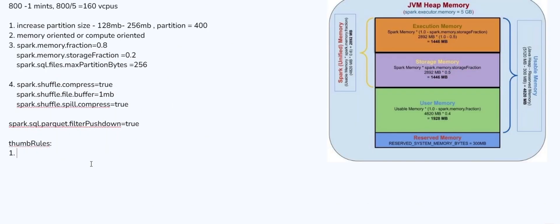The thumb rules are: first, choose the partition count to be two to four times your number of executors or cores — you can even go two to eight times depending on your job type. For a memory-oriented job, you can increase it to as high as eight times. For a compute-oriented job, two to four times is typical.